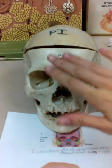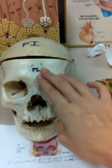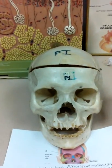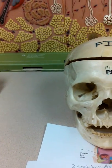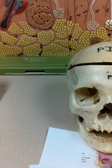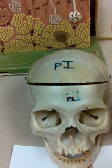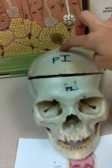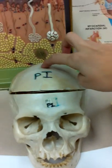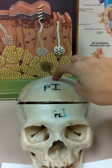We have the frontal bone, the parietals on each side, and the occipital all the way on the back. The coronal suture is right here and the sagittal runs along. Where they meet at the bottom right here is the bregma in adults.